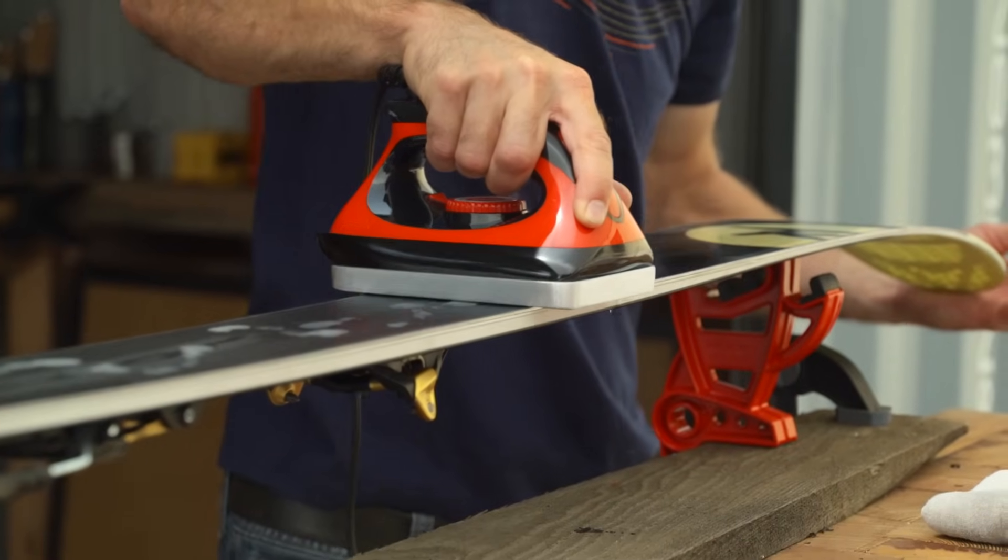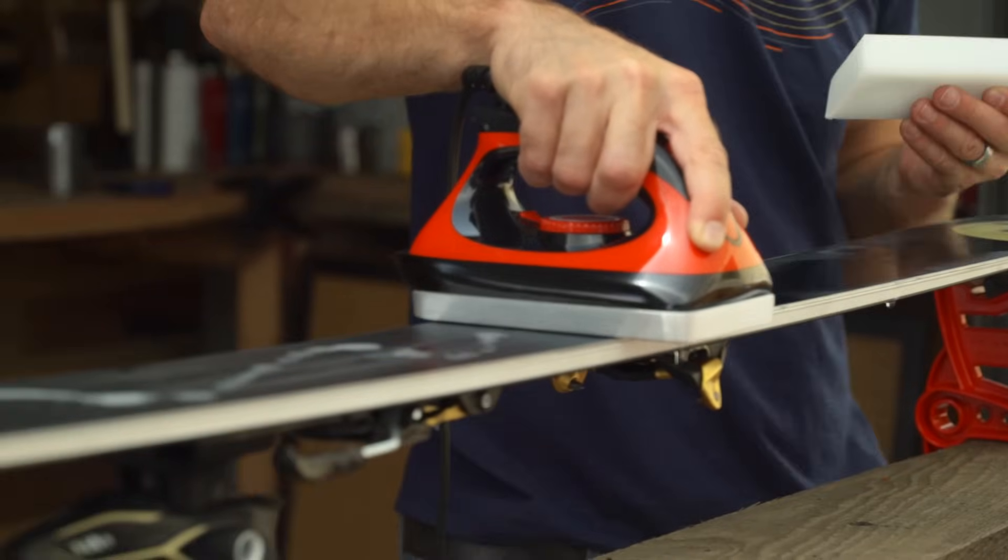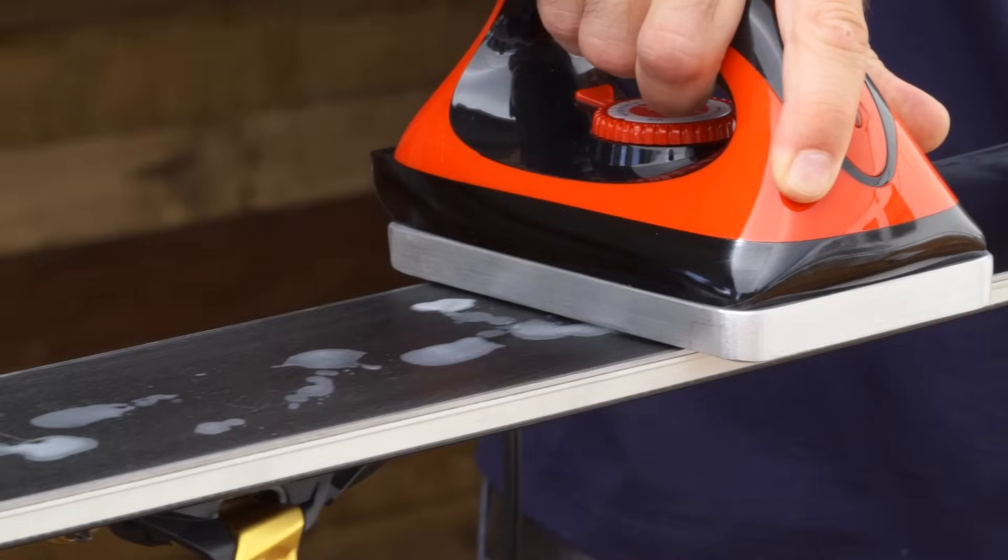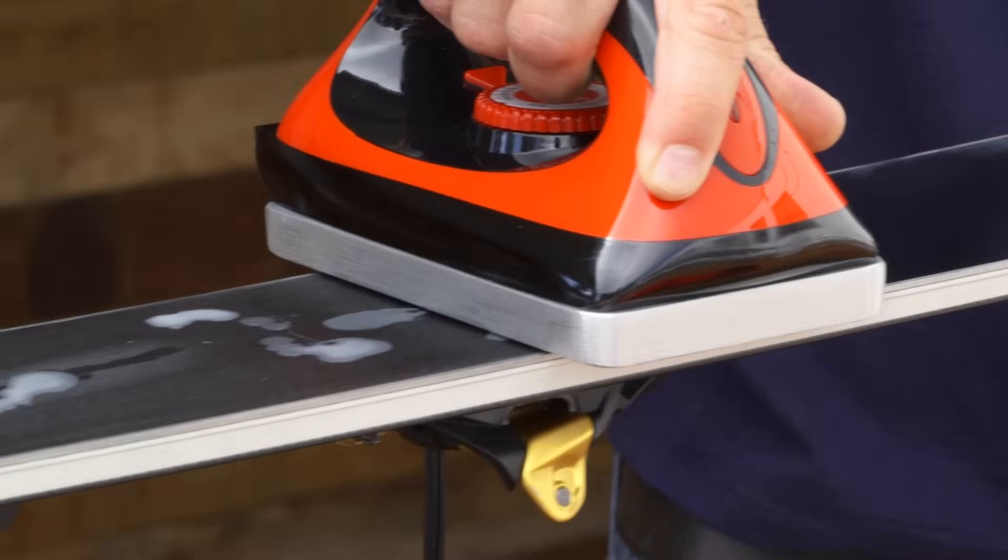Work the wax into the ski from tip to tail, making sure it reaches the edges. If it doesn't, add more wax. Keep the iron moving at an even speed. You should see a trail of molten wax about three to five inches behind the iron.